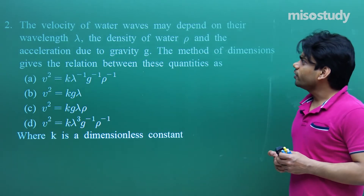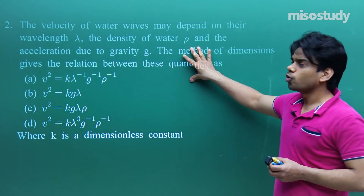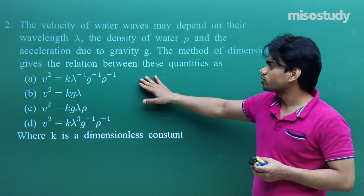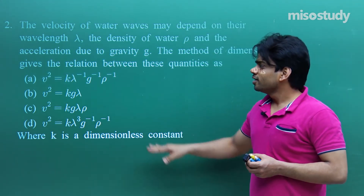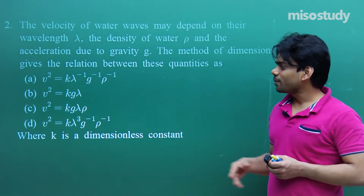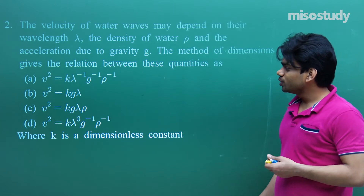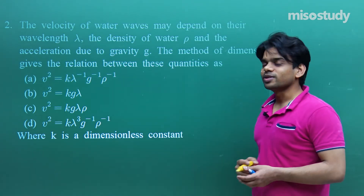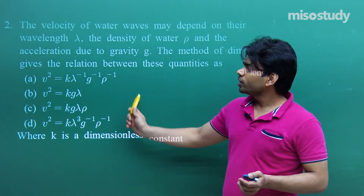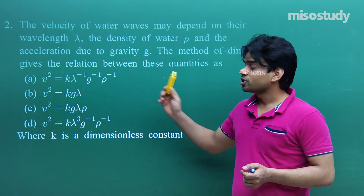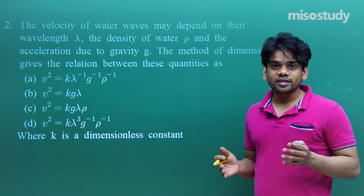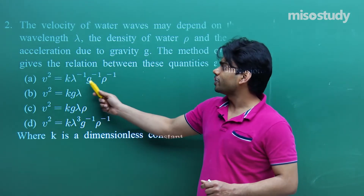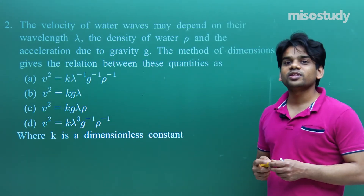Question 2: The velocity of water waves may depend on their wavelength λ, the density of water ρ, and the acceleration due to gravity g. Using dimensional analysis, the relation is: A) v² = k·λ⁻¹g⁻¹ρ⁻¹; B) v² = k·gλ; C) v² = k·gλρ; D) v² = k·λ³g⁻¹ρ⁻¹, where k is a dimensionless constant. We need to find which option is correct by checking dimensions.